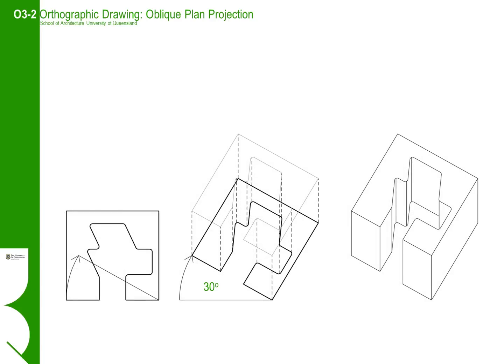We can repeat the same process again with the second plan view. In this instance, we are drawing the layered cube and we are drawing both halves of the cube independently. We will bring them together later in two different versions of plan oblique views.